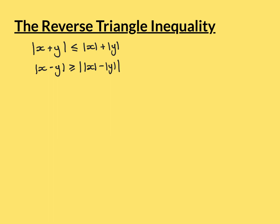The inequality written below is what's called the reverse triangle inequality. It says, again, if you've got any two real numbers x and y, this will always be true: that the mod of x minus y is always going to be greater than or equal to the mod of the mod of x minus the mod of y. This result follows from the main triangle inequality, and I'm going to show you how in just a moment.